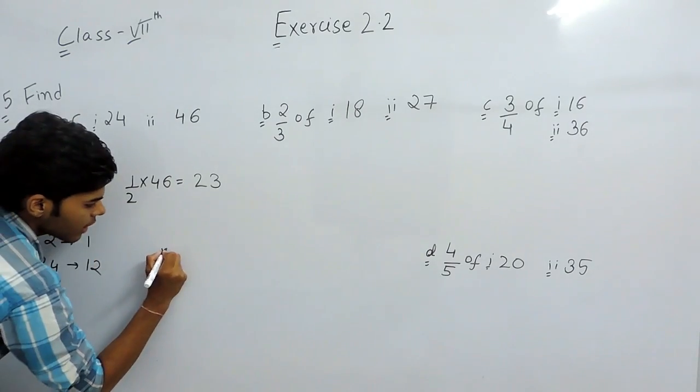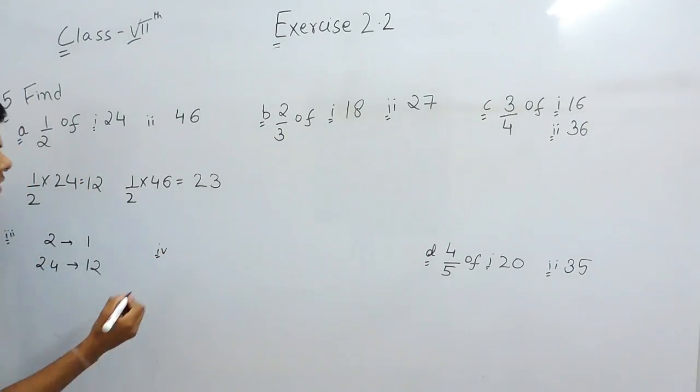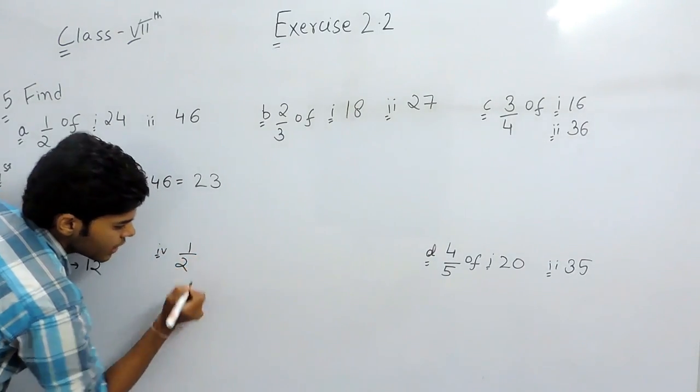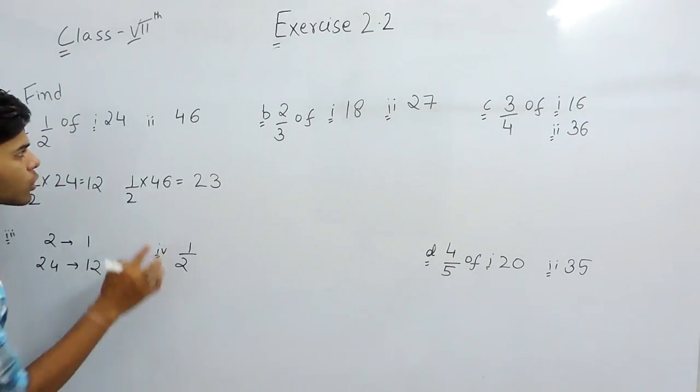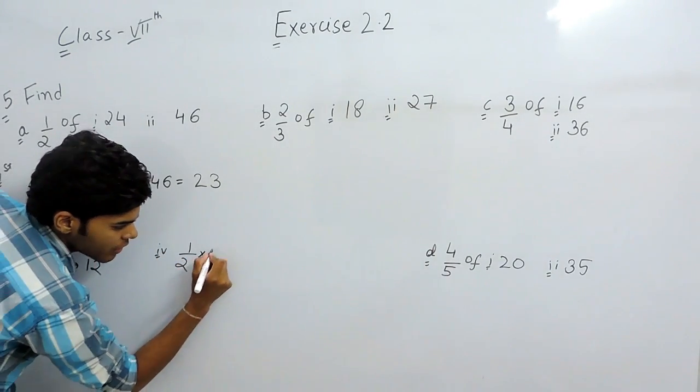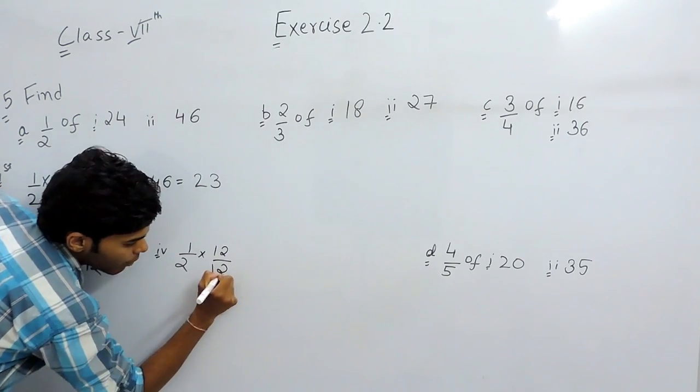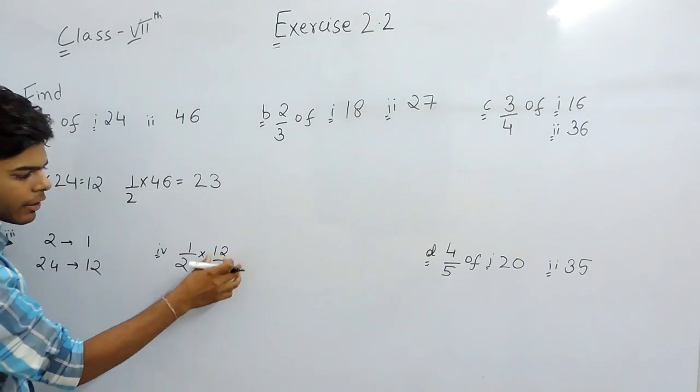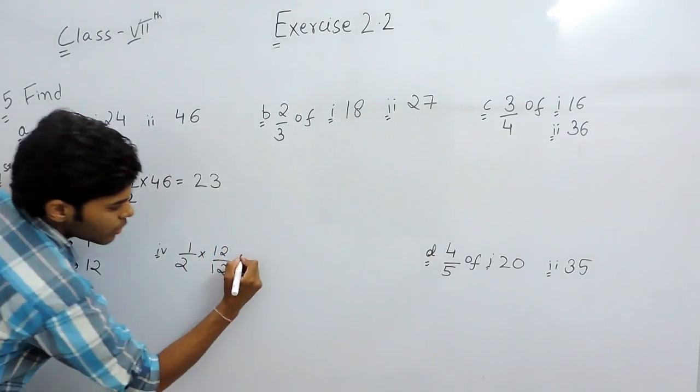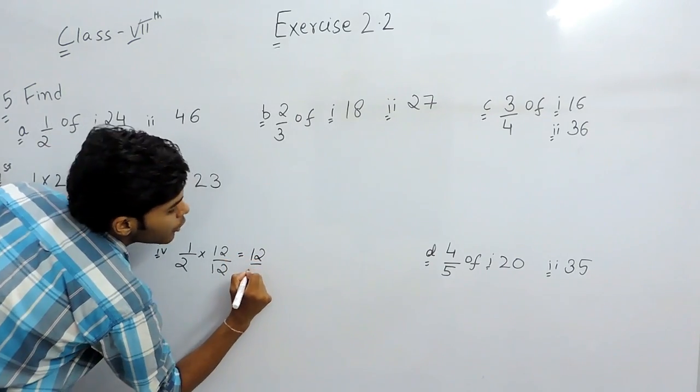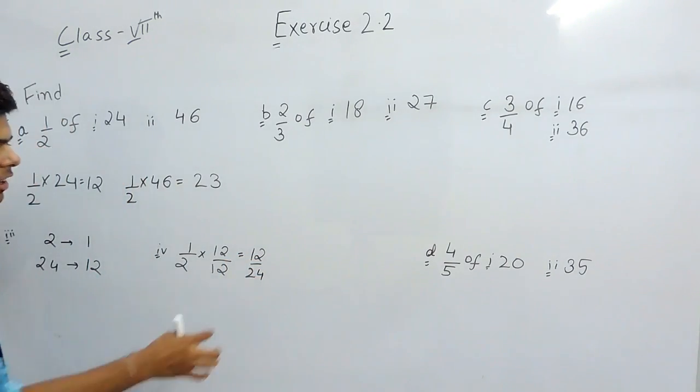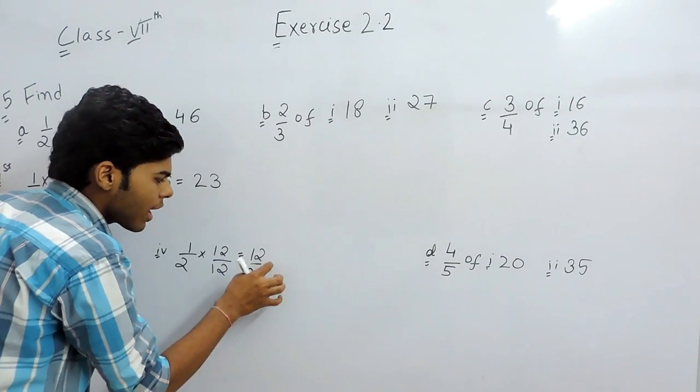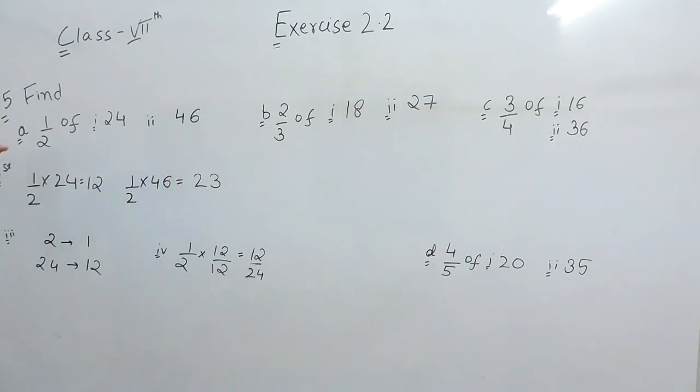And the last method is, that means the fourth method is, that 1 upon 2 is this. You make it equals to 24. Obviously, if the denominator will be 24 and multiply and divide it with 12, that will be 12 by 24. Which means that if totally there are 24 parts, 12 will be shaded. These are the 4 methods.